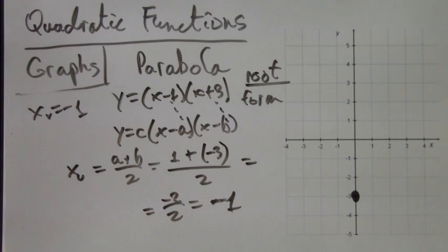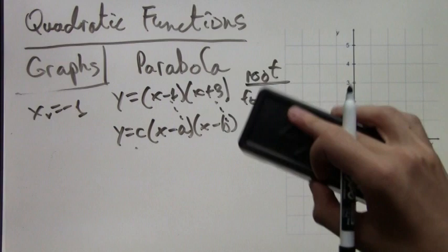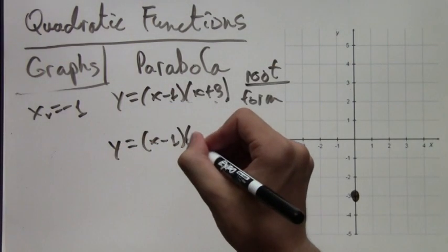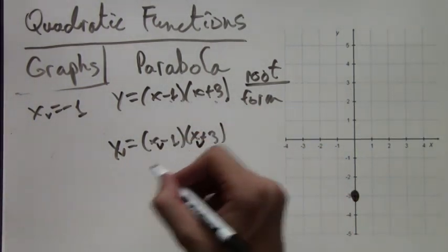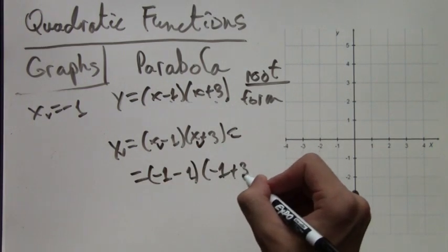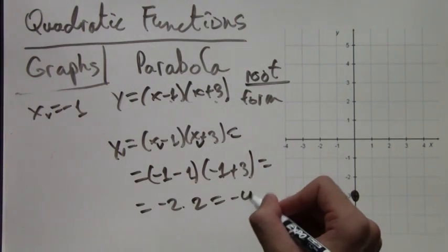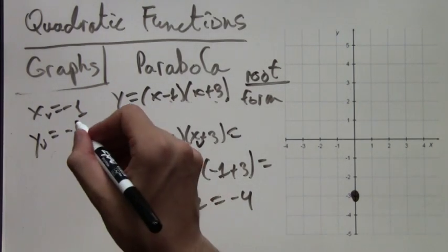To find the y-coordinate of the vertex, we plug in the x-coordinate into the function. We know xv equals negative 1, and y equals (x - 1)(x + 3). So yv equals (xv - 1)(xv + 3), which is (negative 1 minus 1) times (negative 1 plus 3). This equals negative 2 times 2, which is negative 4. So we have the full coordinates: (-1, -4).